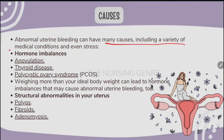Hormonal imbalances are a key cause — specifically imbalances in progesterone and estrogen. If you have anovulation (absence of ovulation/egg release), you may have AUB. Thyroid disease causes hormone alteration. PCOD (polycystic ovarian syndrome) is another cause. Weighing more than your ideal body weight can also lead to hormone imbalances that cause abnormal uterine bleeding.